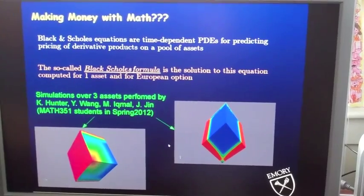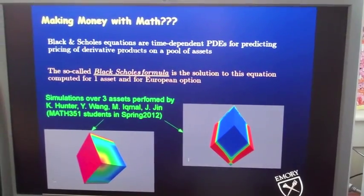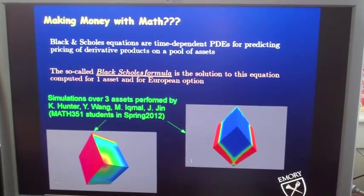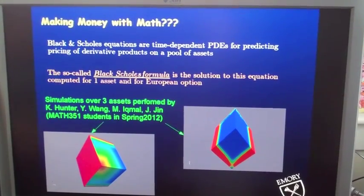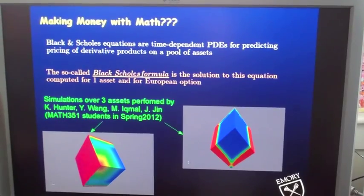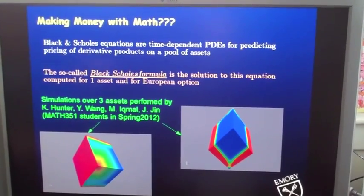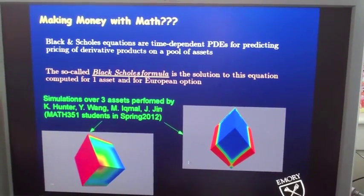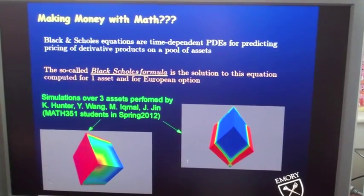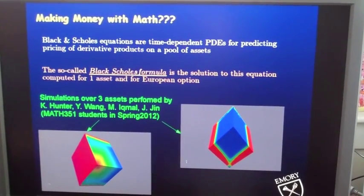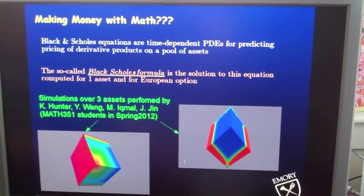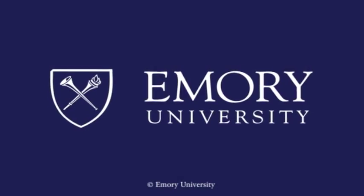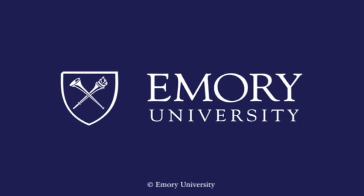Making money with mathematics, because these equations are the basis for pricing of derivatives—derivatives of products based on an asset, on a pool of assets. These are the simulations of pricing, so we are trying to predict price. So one in principle should be able to decide to sell or to buy using these predictions, so to make money using mathematics. The preceding program is copyrighted by Emory University.